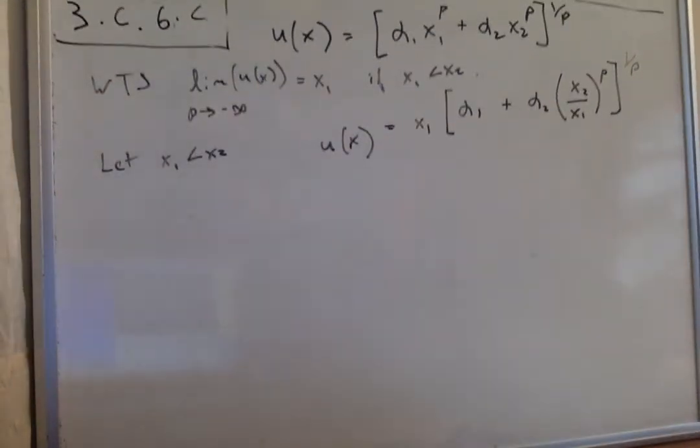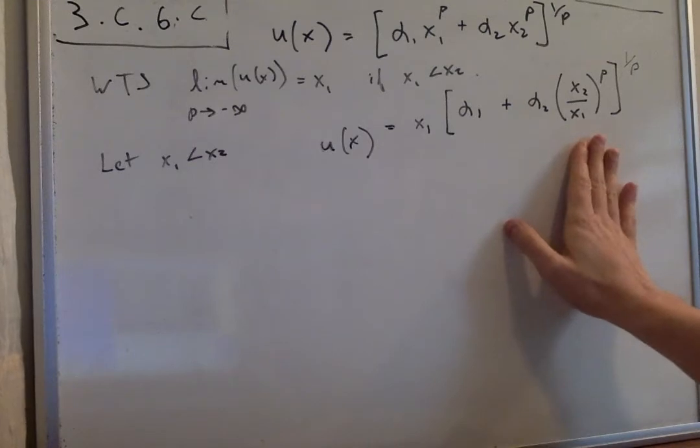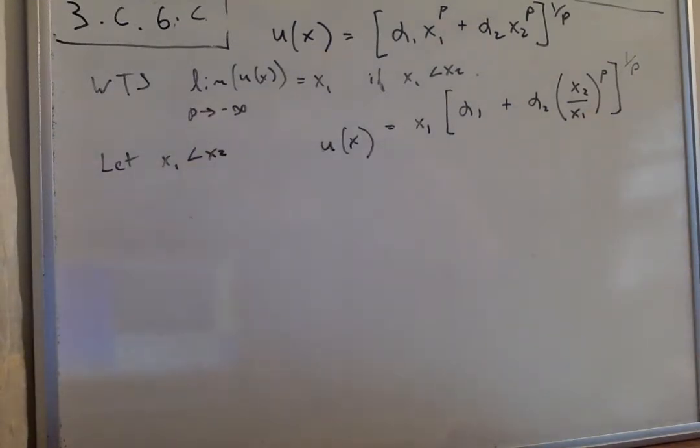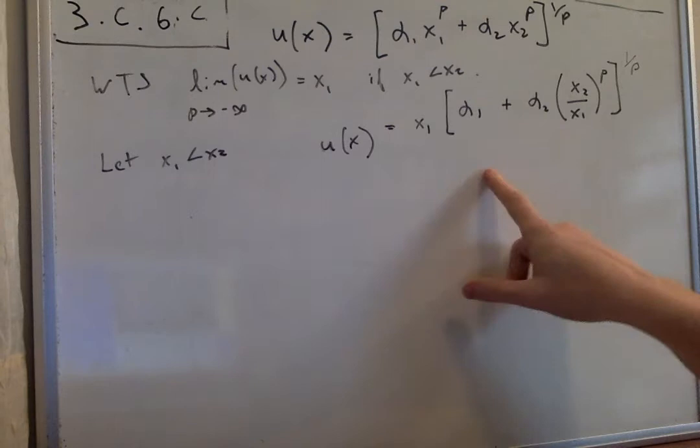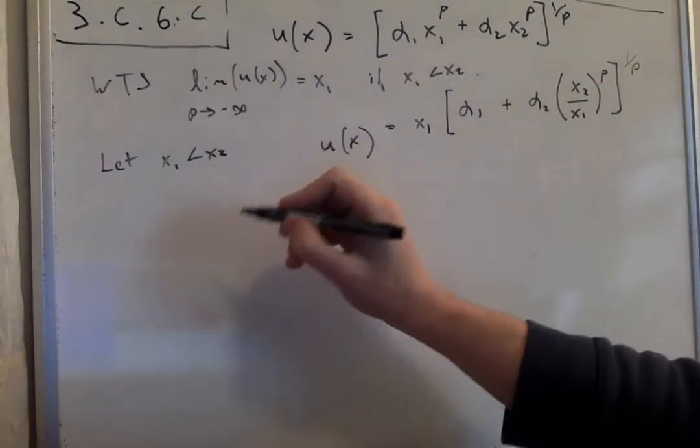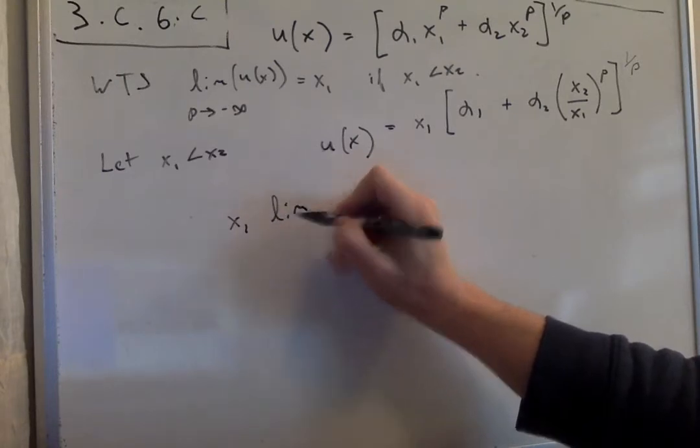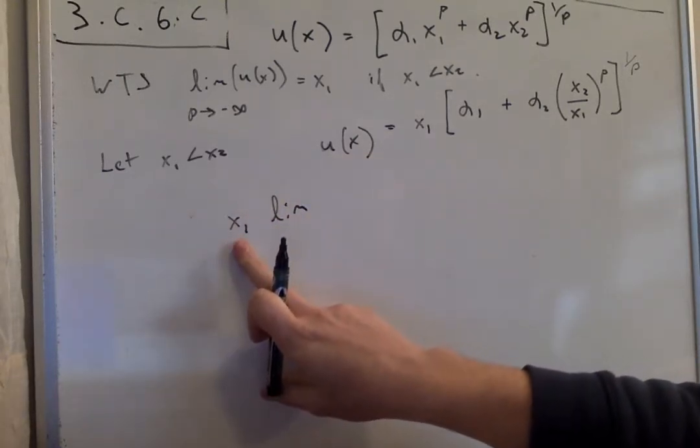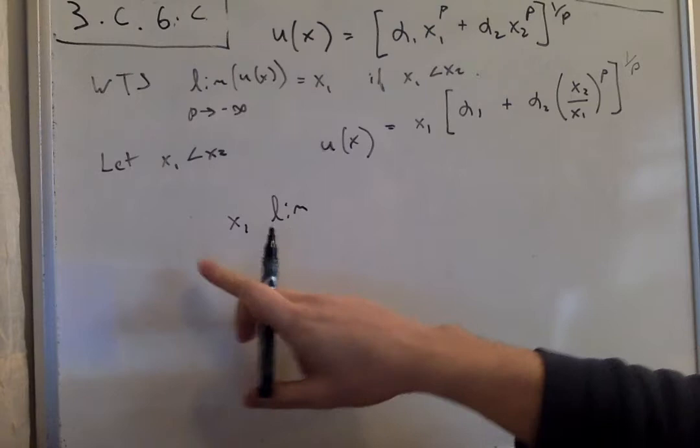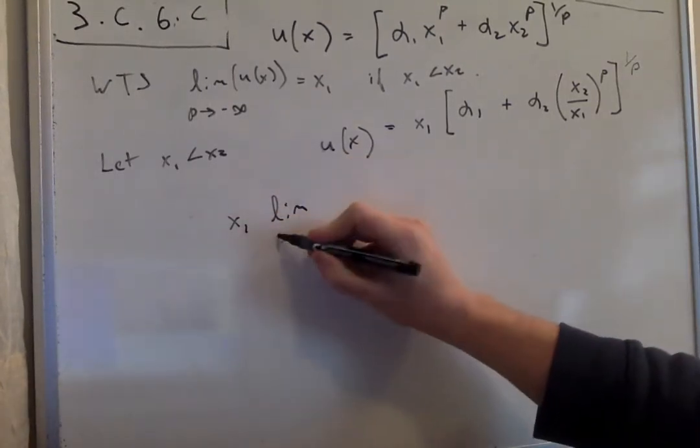We want to take the limit as ρ goes to negative infinity. It's going to be tricky, so we'll apply a transform, the natural log. By limit laws, we can write that limit as x₁ times the limit, because x₁ is a constant here. It's not changing as the limit changes, so we don't worry about it right now.